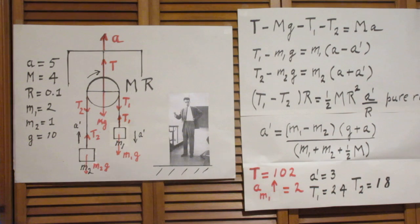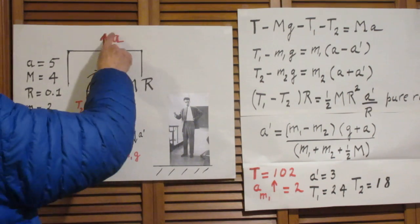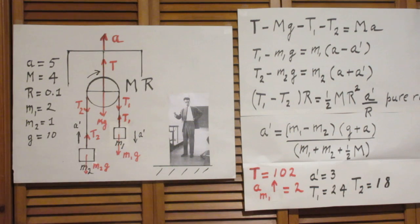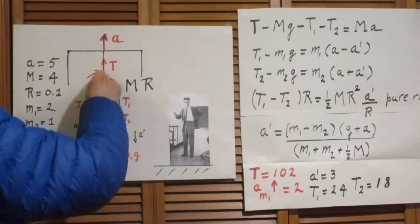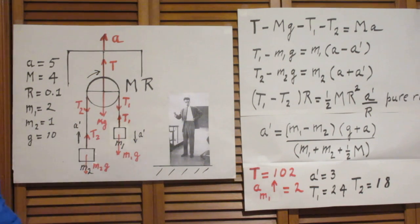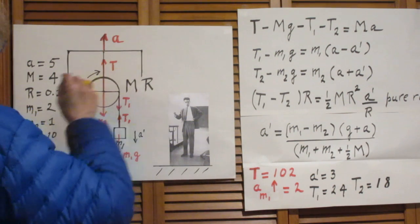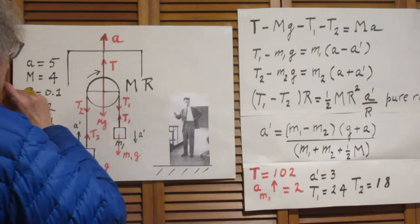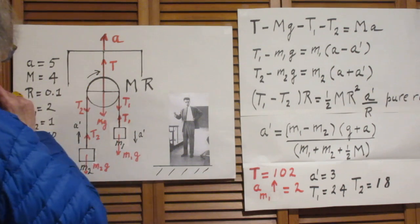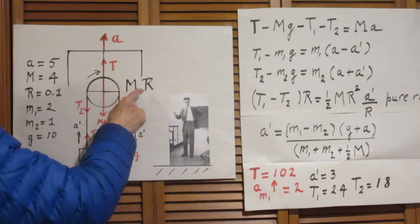The elevator was being accelerated upwards with acceleration a, and inside the elevator is a pulley. The pulley is attached with a string to the top of the elevator. The axle is frictionless, the pulley is a solid disk with uniform mass density, total mass capital M, radius capital R.